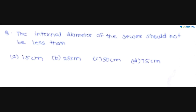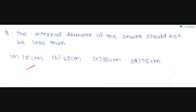The next question is: the internal diameter of a sewer should not be less than — option A is 15 centimeters, option B is 25 centimeters, option C is 50 centimeters, and option D is 75 centimeters. Generally, the internal diameter of a sewer should not be less than 15 centimeters. So option A is the correct answer for this question.